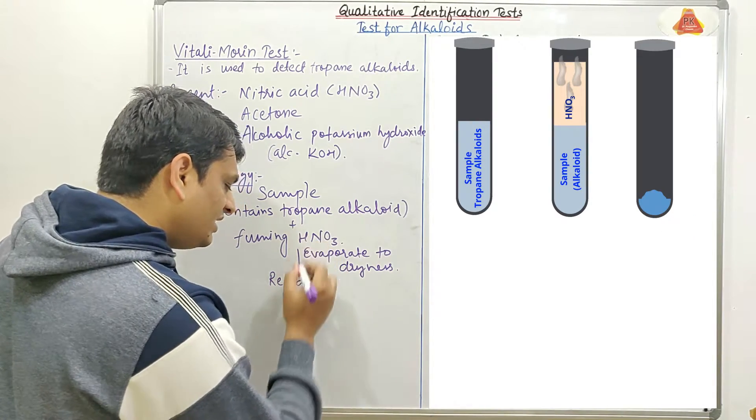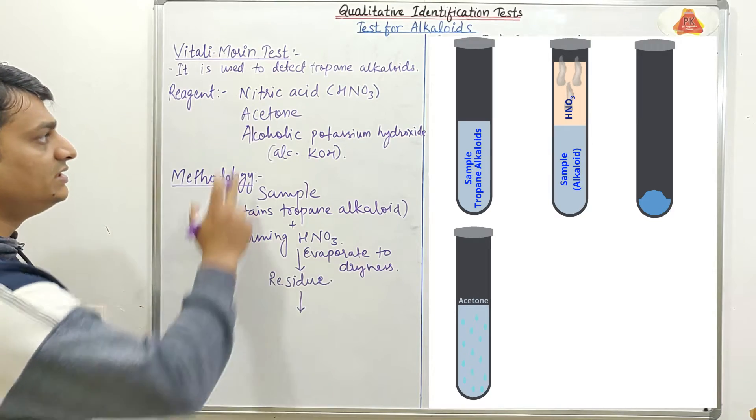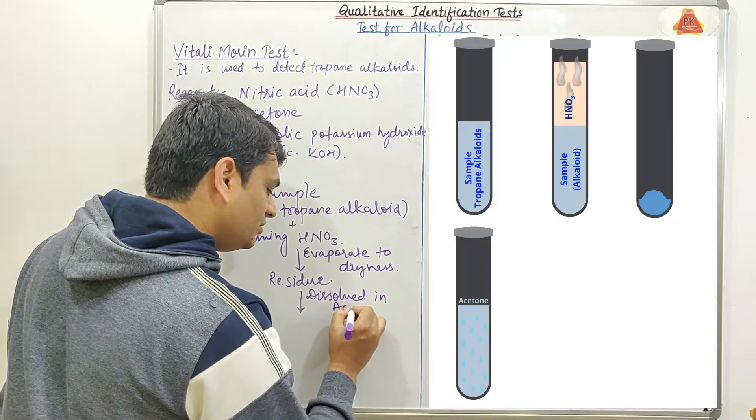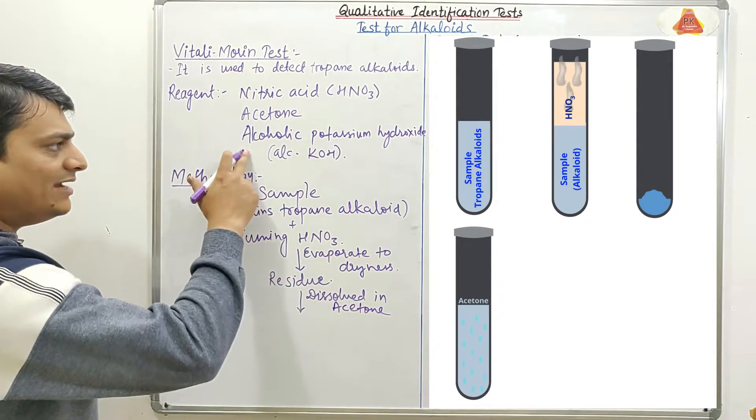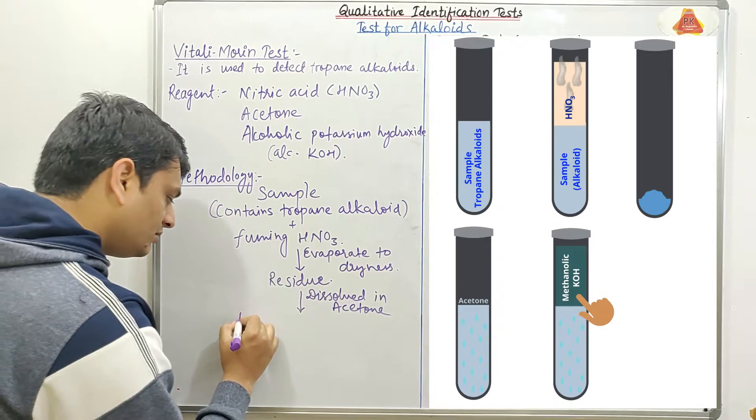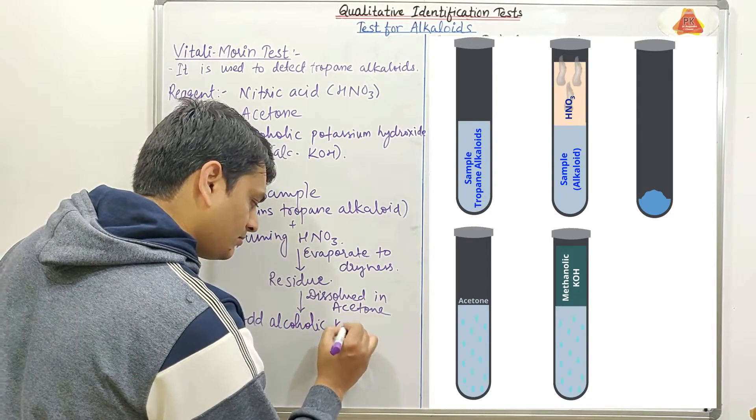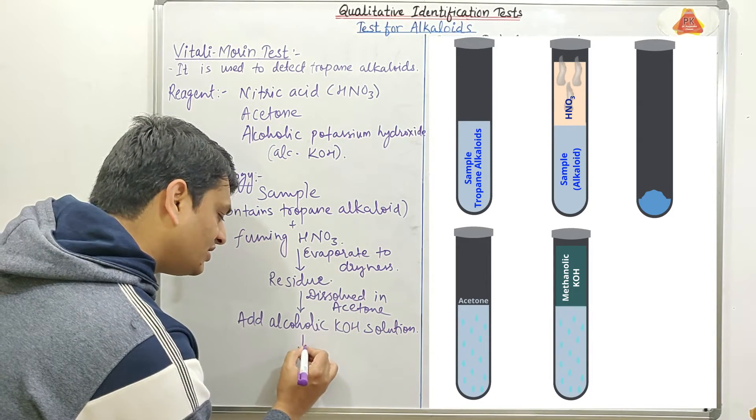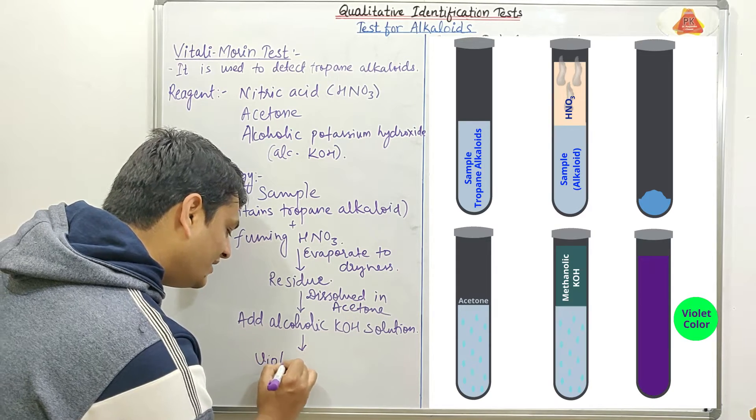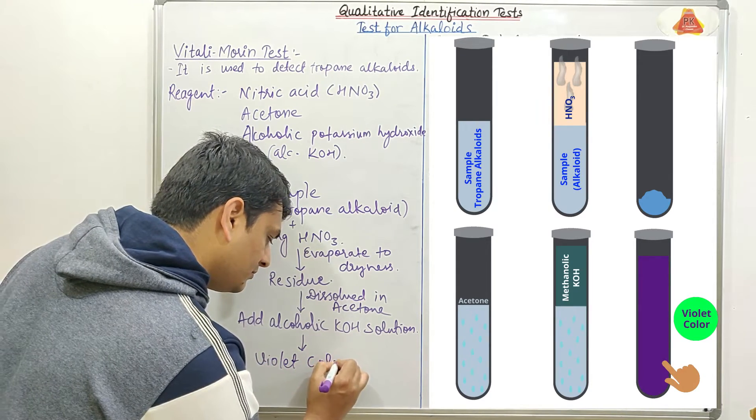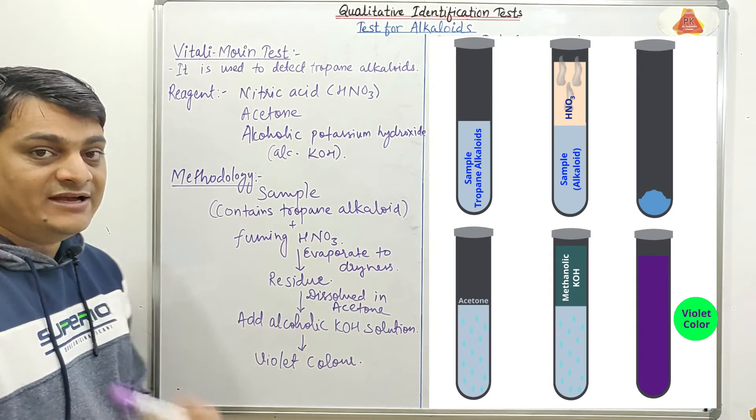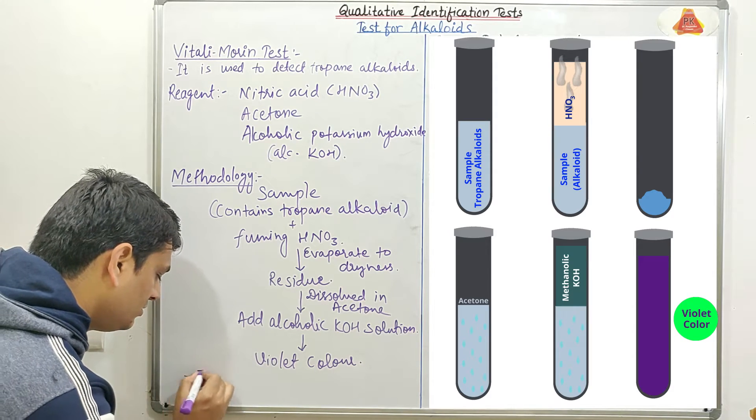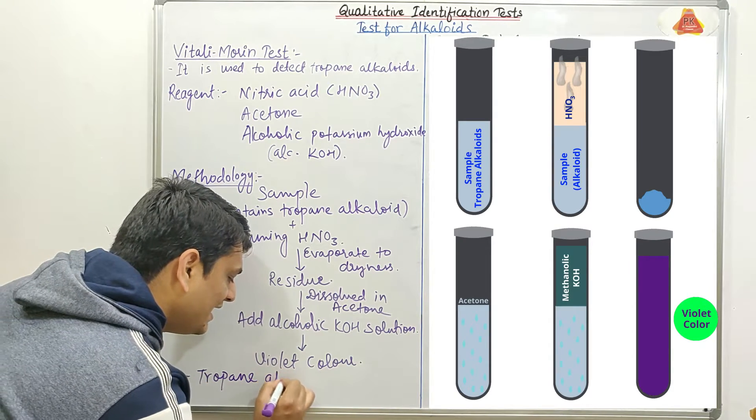Now in next step, this residue will be dissolved in acetone, dissolved in acetone, then we will add alcoholic KOH solution. So after addition of this alcoholic KOH solution, we will get violet color and appearance of this violet color indicates our sample contains tropane alkaloid. Tropane alkaloid is present.